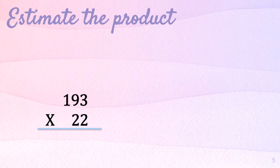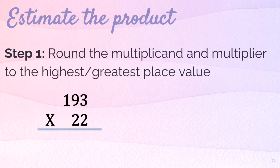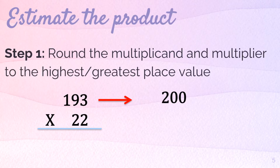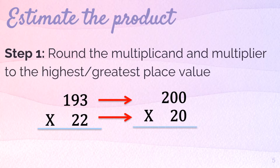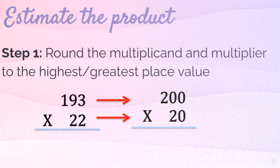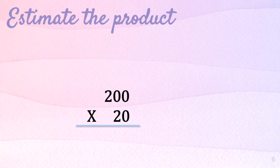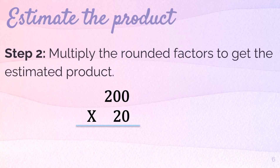So let's try estimating product. Estimate the product of 193 times 22. The first step is to round the multiplicand and the multiplier to the highest and greatest place value. For the multiplicand, we have 193, and the greatest place value is the hundreds place. So round it to the nearest hundreds and that will be 200. For the multiplier, the greatest place value is tens. So round to the nearest tens and that will be 20.